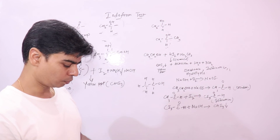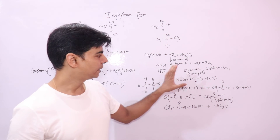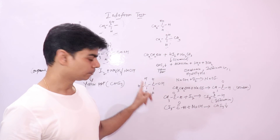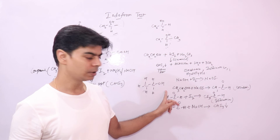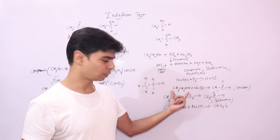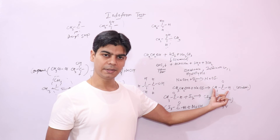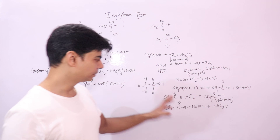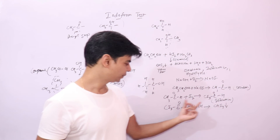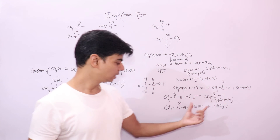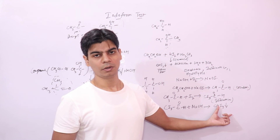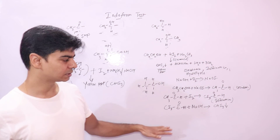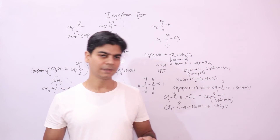Just remember the three steps: in oxidation, ethanol forms acetaldehyde containing the acetyl group; then halogenation with iodine forms the triiodo compound; then hydrolysis gives you the yellow Iodoform precipitate. This is your positive Iodoform test through these three chemical steps. I hope all this is clear. Thanks.